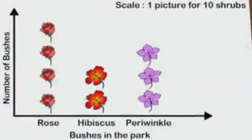Scale means one picture stands for 10 shrubs. Because of this, the number of pictures we need to draw decreases, and we can easily draw them. Remember, one picture stands for 10 shrubs — don't forget it. That's why we use a scale for showing quantities in pictures, and by using this scale, we can show any quantity in tables.